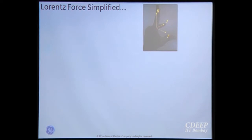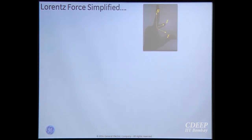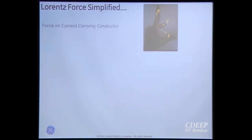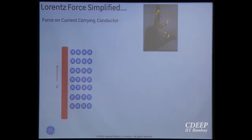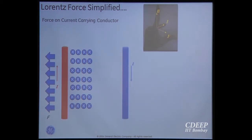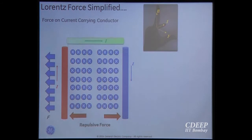The third part is force, because all machines and motors work on Lorentz force. If we have a current-carrying bar going in the top direction and a field going in the plane, applying Fleming's left-hand rule gives a force in the thumb direction. If we have an opposite current-carrying bar with the same field direction, the force is in the opposite direction, creating a repulsive force between them as you push them closer.